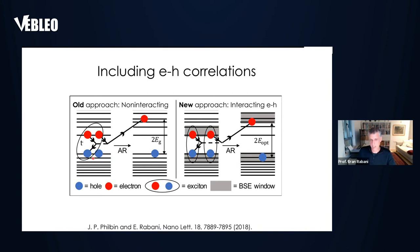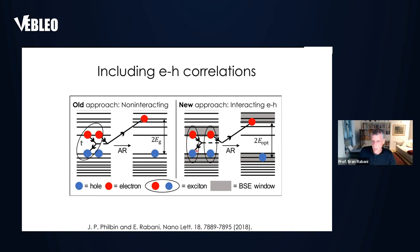Ignoring correlations in the initial state may be a wrong assumption when describing Auger physics in nanoparticles. However, it's really challenging from a computational perspective to include such correlations, because we're talking about a system that contains thousands or tens of thousands of electrons, and we're describing correlations of a biexcitonic state, not even a singly excited state. So what we set out to do is to devise an approach that includes interactions and correlations between electrons and holes — but only the essential correlations, which in this case are the electron-hole correlations.